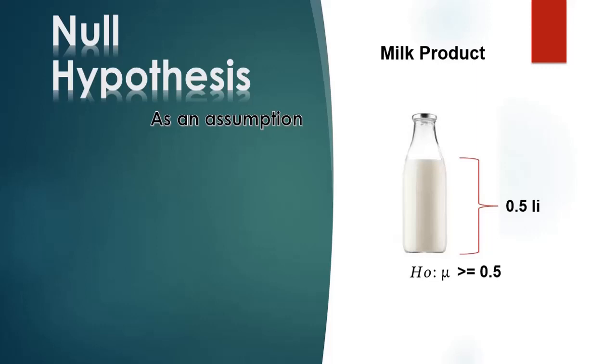H0 is μ greater than or equal to 0.5 liter, while HA is μ less than 0.5 liter. If sample results lead to the conclusion to reject H0, then HA is true. The same product production process operating correctly would state the null hypothesis as μ equal to 0.5 liter.